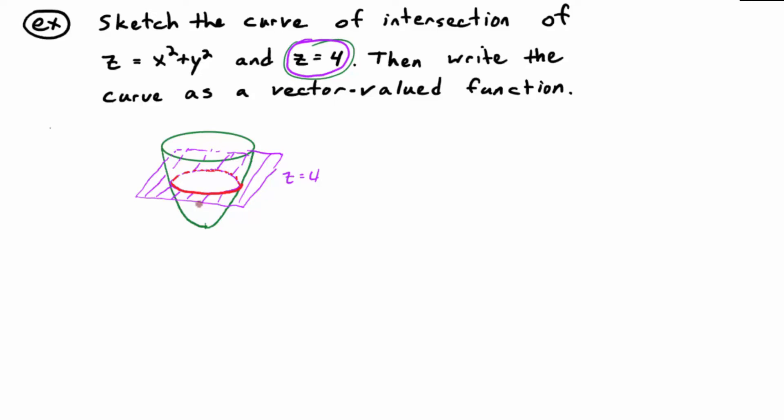The second part says, write the curve as a vector-valued function. We need R of T, and we need the parametric equations for each coordinate of R of T, each component of R of T.